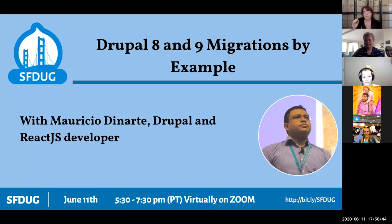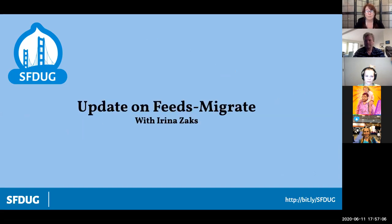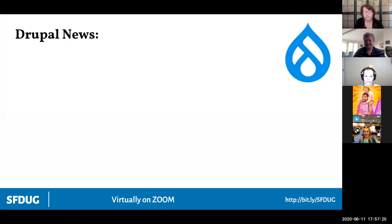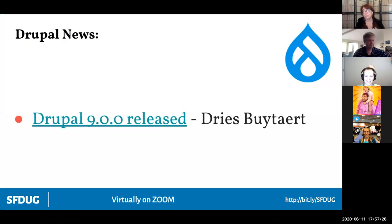Today Mauricio will explain the Migrate API and concepts like source, process, and destination plugins from a site builder perspective, covering subfields, constraints, and processes. Irene and James will talk about the Feeds Migrate module and getting it ready for Drupal 9. In Drupal news, Drupal 9 was released — Dries and Acquia both wrote articles on it.